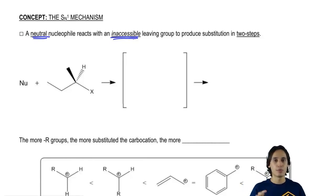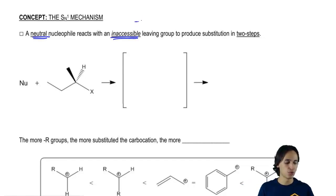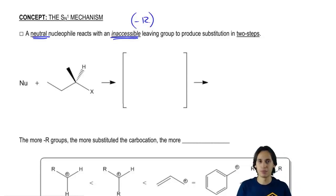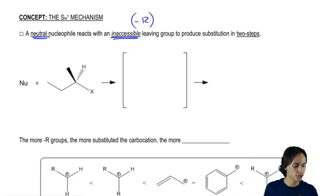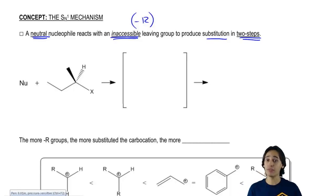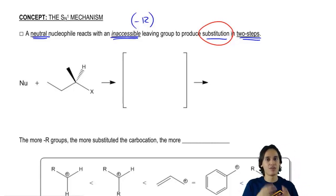Well, neutral means that—remember that SN2 is negative—so this one means neutral, it's not going to have that strong nucleophilic property. Inaccessible has to do with R groups. So we're going to get there in a second, but you can already start to think that must mean that there's a lot of R groups maybe. And that's going to produce substitution in two steps. So what you can see is that in this sentence almost every word has changed except for substitution.